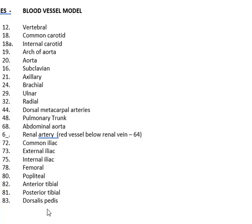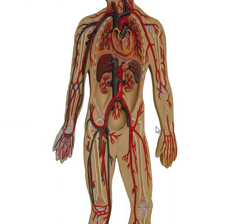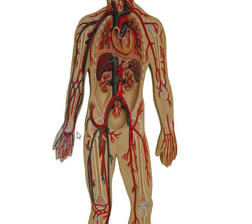I would print out a copy of these blood vessels and sit down with this picture to make sure I could name each one of the arteries. Here are your kidneys — so you know that the artery coming off the kidneys has to be the renal artery.